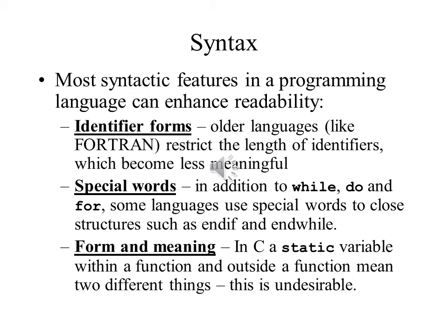In older languages such as Fortran, identifiers were limited in length. In the case of Fortran, that limit was only six characters, which could make it difficult to give meaningful names to variables. Older C compilers would only look at the first eight characters, so two identifiers that differed in the ninth character or beyond were treated as if they were the same identifier. Current versions of C look at the first 31 characters. Newer languages have either no limits or higher limits such as 255 characters, making it easier to create meaningful variable names.